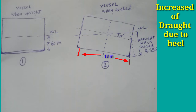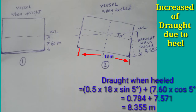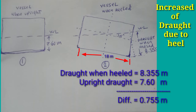Now let us compute how the draft became 8.355 meters using the formula. Given: heel = 5 degrees, beam = 18 meters, and upright draft = 7.60 meters. Draft when heeled equals 0.5 times 18 times sine 5 degrees, plus 7.60 meters times cosine 5 degrees. This gives us 0.784 plus 7.571, which equals 8.355 meters.